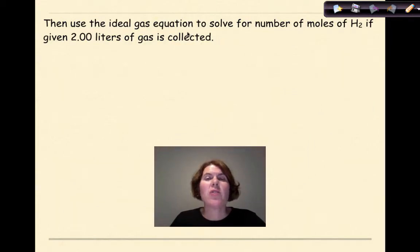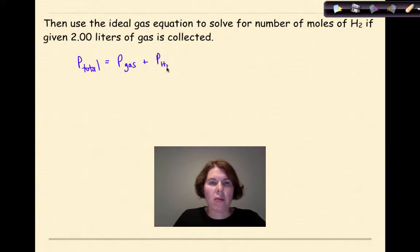And we're going to use that in our next example. Then we're going to use the ideal gas equation to solve for the number of moles of hydrogen gas if it's given that two liters of gas is collected. So what we're going to do is take P total, which equals pressure of our gas plus the pressure of the water vapor. So the first thing that we want to do is get basically the pressure of our gas. So in this problem, it's said that 765 torr is our total pressure. We're going to solve for the pressure of the gas, and I told you that the pressure of the water vapor at 26 degrees Celsius is 25.21 torr.